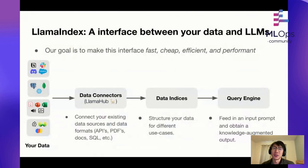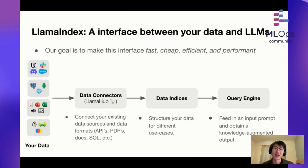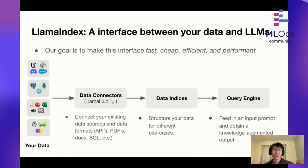Going into the components of Llama Index — the goal is to make this interface fast, cheap, efficient, and performant. We have three components. First, data connectors, which you can find on Llama Hub — basically a set of data loaders from all different data sources into a document format you can use with Llama Index or even LangChain. Second, data indexes — once you ingest this data, how do you structure it to solve different knowledge-augmented generation use cases? Third, a query engine, which takes in a query and routes it to the appropriate data structures to give you back the response you want.